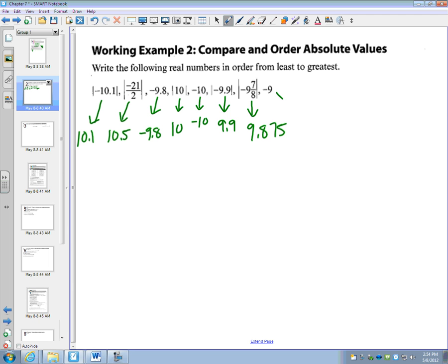And negative 9 remains negative 9. Now what it asks us to do is go from the least to the greatest. So my least is going to be my negative numbers. In particular, I'm going to start with negative 10.